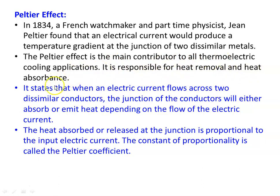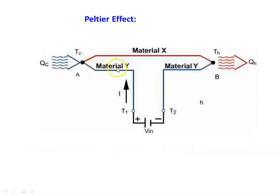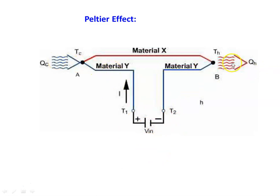The Peltier effect states that when electric current flows across two dissimilar conductors, the junction will either absorb or emit heat depending on the direction of current flow. The heat produced or released at the junction is proportional to the input electric current, and the constant of proportionality is called the Peltier coefficient. For two materials X and Y with applied voltage, one junction is hot — rejecting heat — and the other is cold — absorbing heat energy. When a temperature difference is maintained, a voltage is generated; when voltage is applied, heat is absorbed and removed.